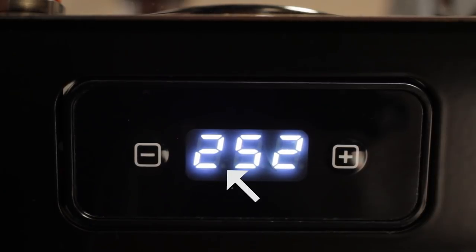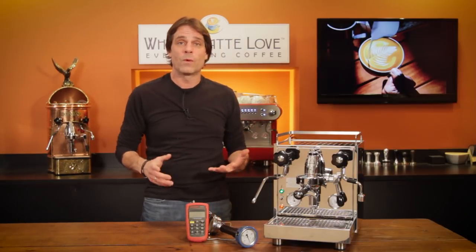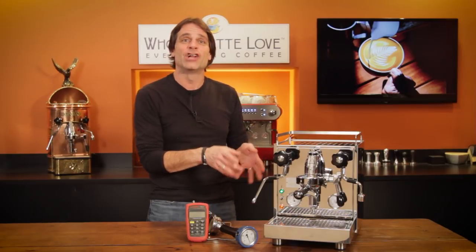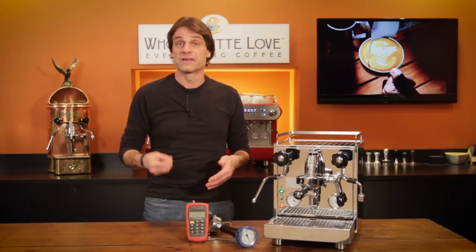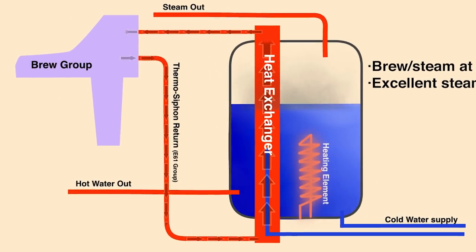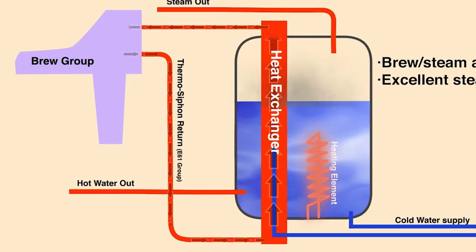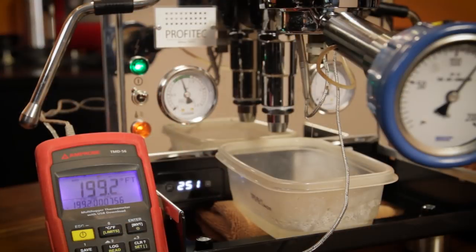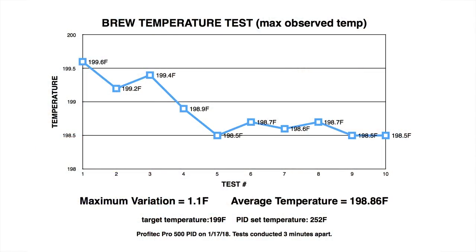In heat exchange machines, the boiler is typically running about 50 degrees hotter than the desired brew temperature so the machine can produce steam, and that happens on the 500 as well. What this machine gets right is that PID along with the engineering of the E61's thermosyphon system. By controlling convective flow through the brew group, the Pro 500 produces incredibly consistent brew temps at the group. In my testing using a SCASE device, brew temps had a maximum variation of 1.1 degrees Fahrenheit in 10 tests conducted 3 minutes apart. When set to produce a brew temp of 199 degrees, the average brew temp delivered over the 10 tests was 198.86 degrees — incredible results, far more consistent than what you'd get on a pressure stat controlled machine.